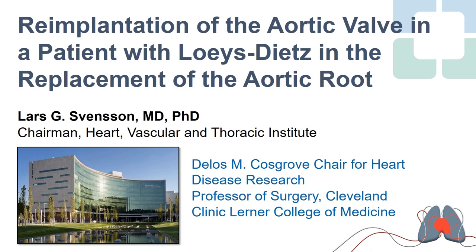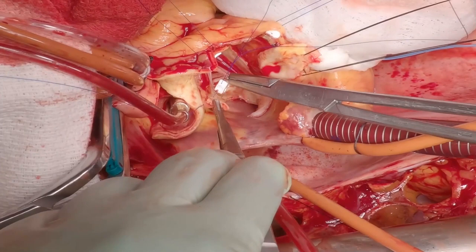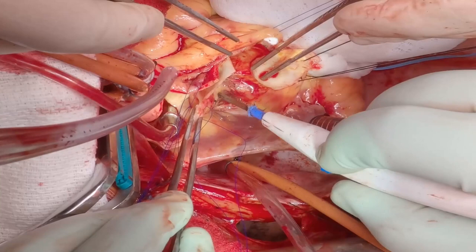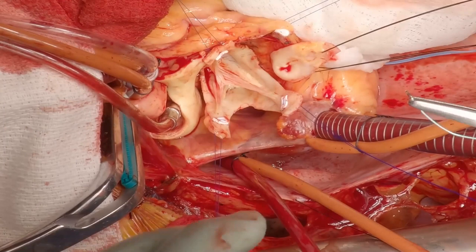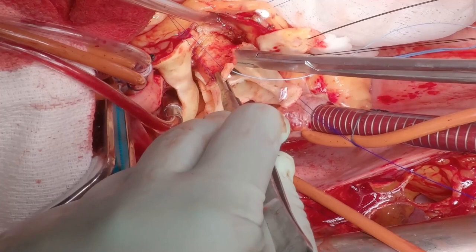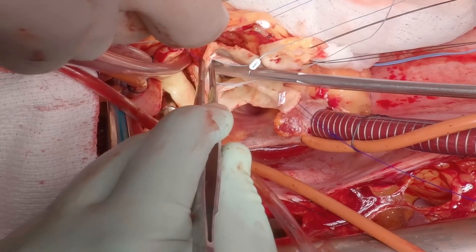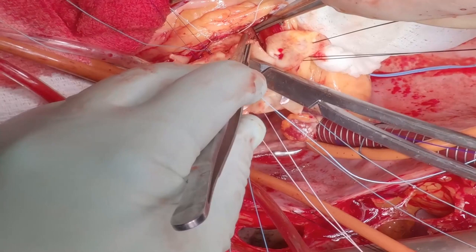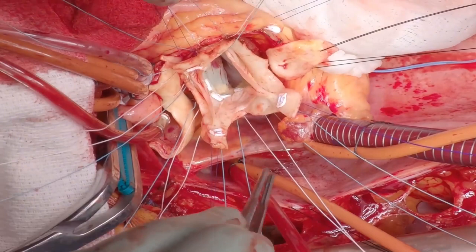I thought it was important to show a brief way we do the re-implantation operation. Here we are putting the pledgeted sutures for the commissures into place, which will be anchored in the tube graft. Here we're freeing up the valve — it's very important that the entire valve is freed up. Then we put sutures underneath the annulus through the left ventricular outflow tract, which are passed through the new tube graft to anchor the valve inside it. In the right ventricular outflow tract area this can be more tricky because the annulus is typically lower.